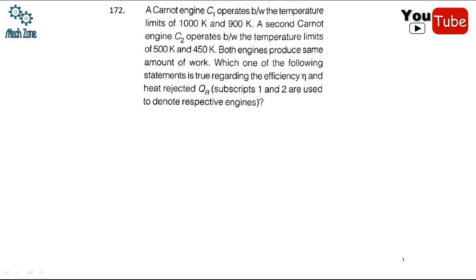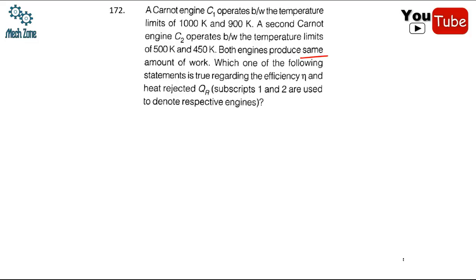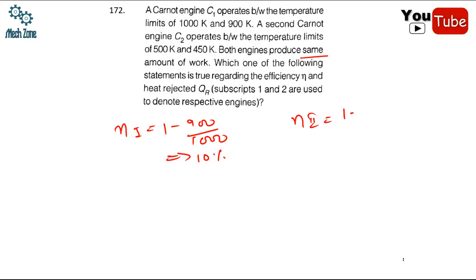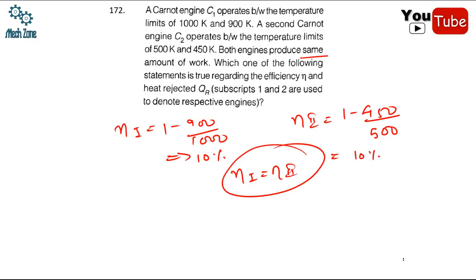Next question: Carnot engine C1 operates between 1000 K and 900 K; both engines produce the same amount of work. Efficiency of engine 1 = 1 - 900/1000 = 10 percent. Efficiency of engine 2 = 1 - 450/500 = 10 percent. So the efficiency of both engines is equal, and since they do equal work, the amounts of heat they reject are also equal.